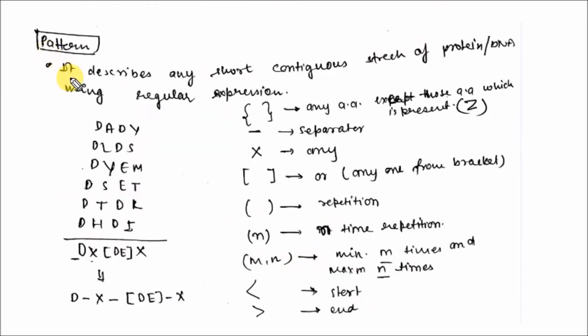Let's discuss the pattern. It describes any short contiguous stretches of protein or DNA using regular expression. Here is an example given: D-A-D-Y-D-L-D-S-D-Y-E-M. You can see for the first number D is the continuous expression. Here A, L, Y, S, T, H are variations of amino acids. You can see here it is X, it is D-E, D-E. So only D-E is present. Here Y, S, M, T, K, I, so it is X. So how can you generate a pattern from different protein or DNA sequences? The curly bracket represents any amino acid except those present in this bracket. If D is present here, then it can be all amino acids except D. Dash is used for the separator. X represents any amino acid here.